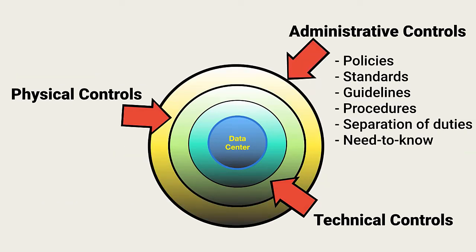Administrative controls drive all other controls. Policies describe management's expectations for security outcomes. Standards, guidelines, and procedures are written documents that describe how the security outcomes should be achieved. Admin controls also include ensuring data confidentiality, integrity, and availability via separation of duties, need-to-know, mandatory vacations, and other methods to ensure appropriate user behavior.